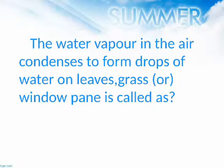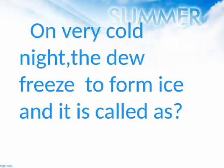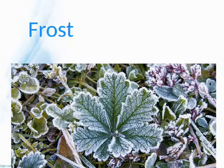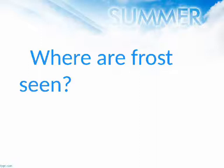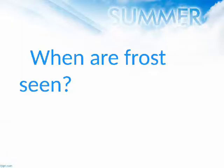The water vapor in the air condenses to form drops of water on leaves, grass, or windowpane is called? Dew. On a very cold night, the dew freezes to form ice and it is called? Frost. Where are frosts seen? North India. When are frosts seen? Cold mornings and winter season.